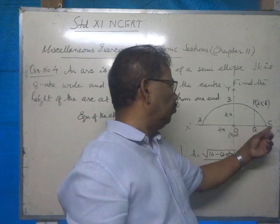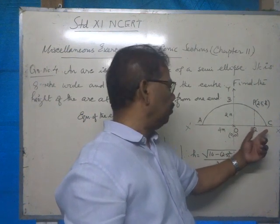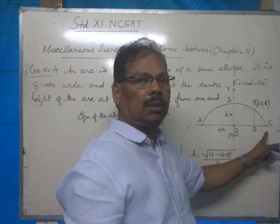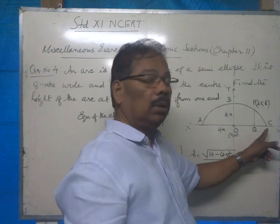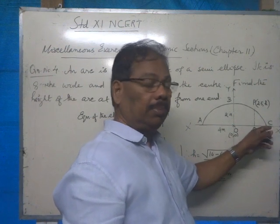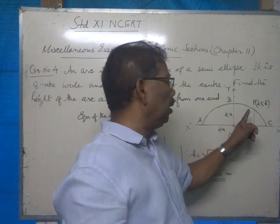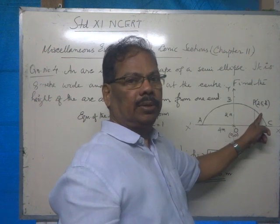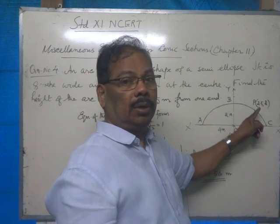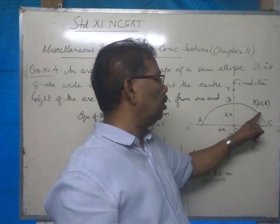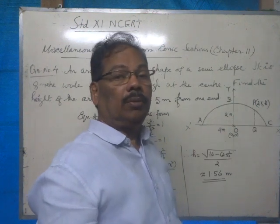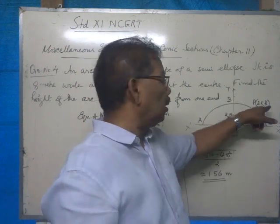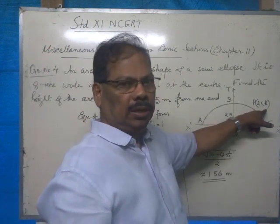The length of one end from the origin is only 4 meter because the total width is 8 meter. Therefore, if you take that particular point to be P, P will be at a distance 2.5 meter from the y-axis. That means the x-coordinate of that particular point will be 2.5 meter. You have to find the y-coordinate — that means that height. Let that height be h.